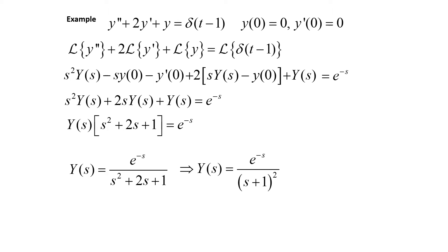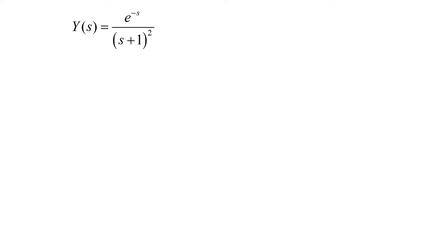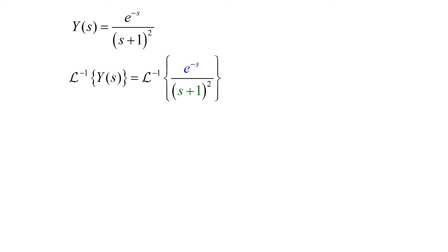So this is our Y(s). To finish the problem, we take the inverse Laplace transform. Y(s) equals e to the negative s over (s plus 1) squared, and we take the inverse Laplace of both sides. The e to the negative s tells us we're going to use the second translation theorem. The fact that I see s plus 1 inside the squared function means I can rewrite this with translation in s, which would be the first translation theorem. So we're going to use both translation theorems on this problem.